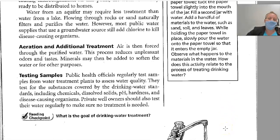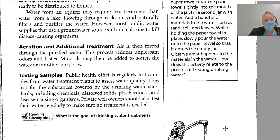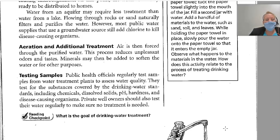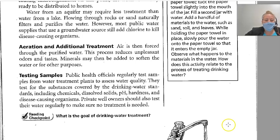Aeration and Additional Treatment. Air is then forced through the purified water — this process reduces unpleasant odors and taste. Minerals may then be added to soften the water and for other purposes. Testing Samples: public health officials regularly test samples from water treatment plants to assess water quality. Tests cover chemicals, dissolved solids, pH, hardness, and disease-causing organisms. Private well owners should also test their water regularly to make sure no treatment is needed.